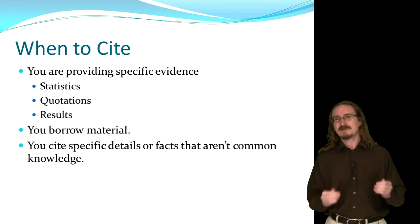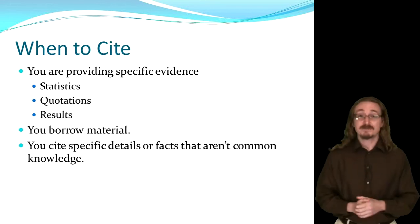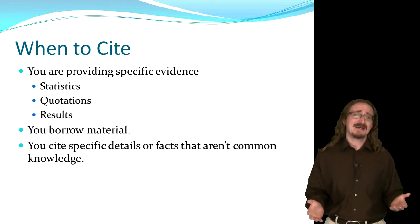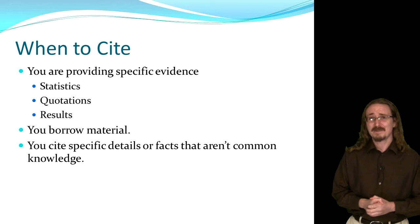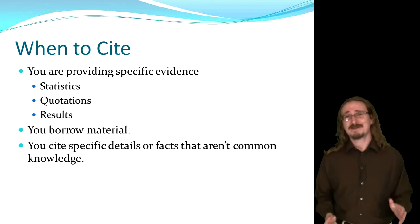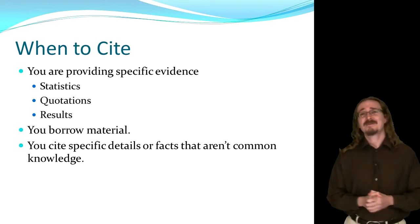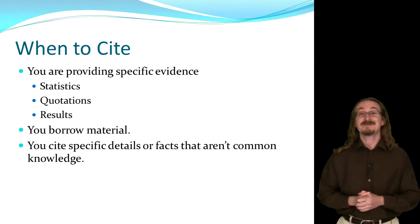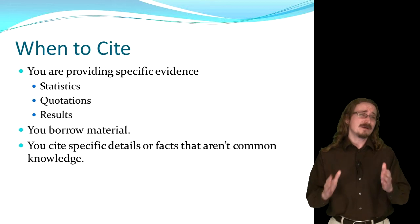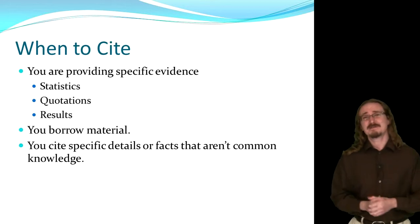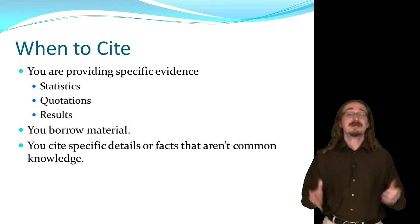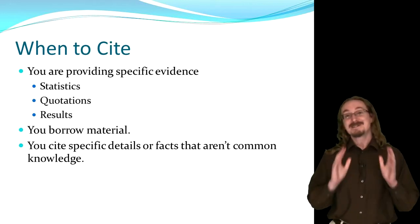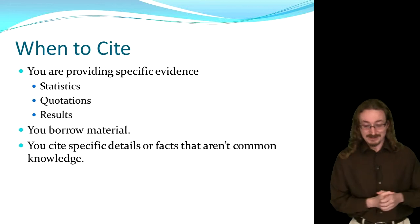Same thing with a specific number. If I just said there are millions of vehicles in the United States, I probably wouldn't need to cite that because it seems fairly commonsensical. However, if I gave a very specific number — like there are 6.72 million vehicles in America — well, where did that number come from? It's a little too specific just to be an average. So I must have gotten it from somewhere, so I need to cite that information. Basically, statistics and specific numbers need to be cited.